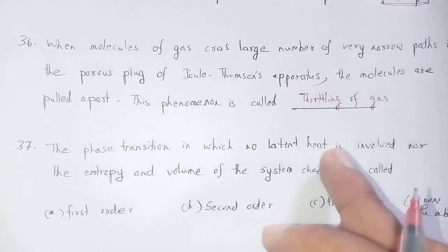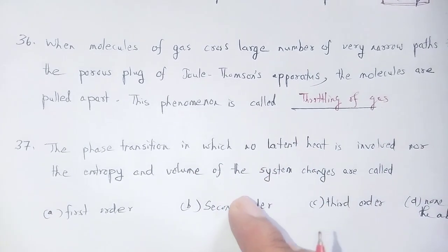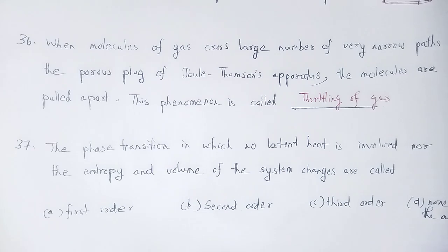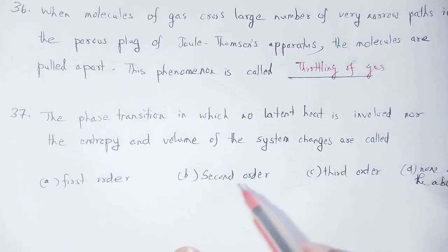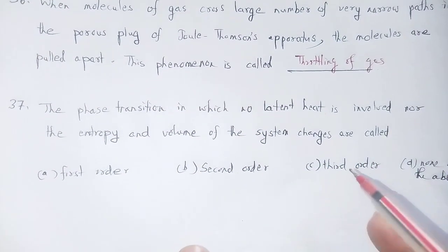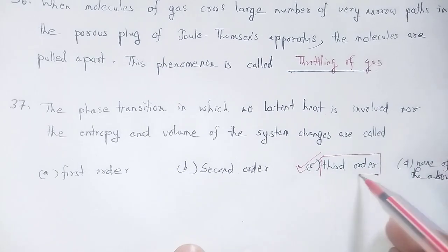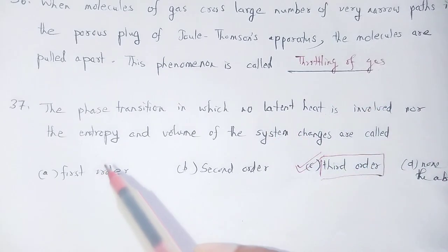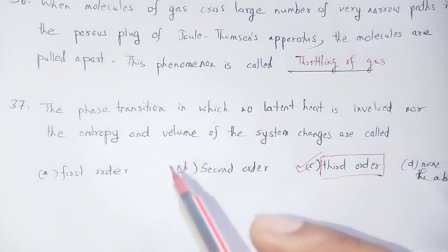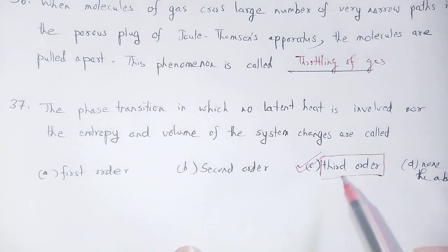The phase transition in which no latent heat is involved, nor does entropy or volume of the system change, is called a third order phase transition.